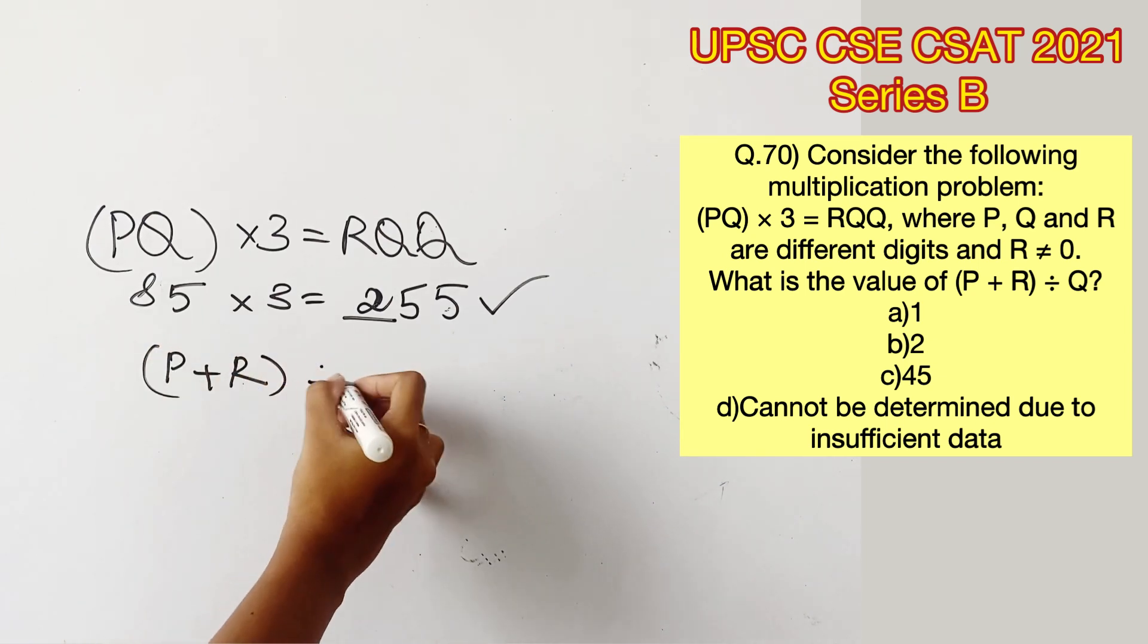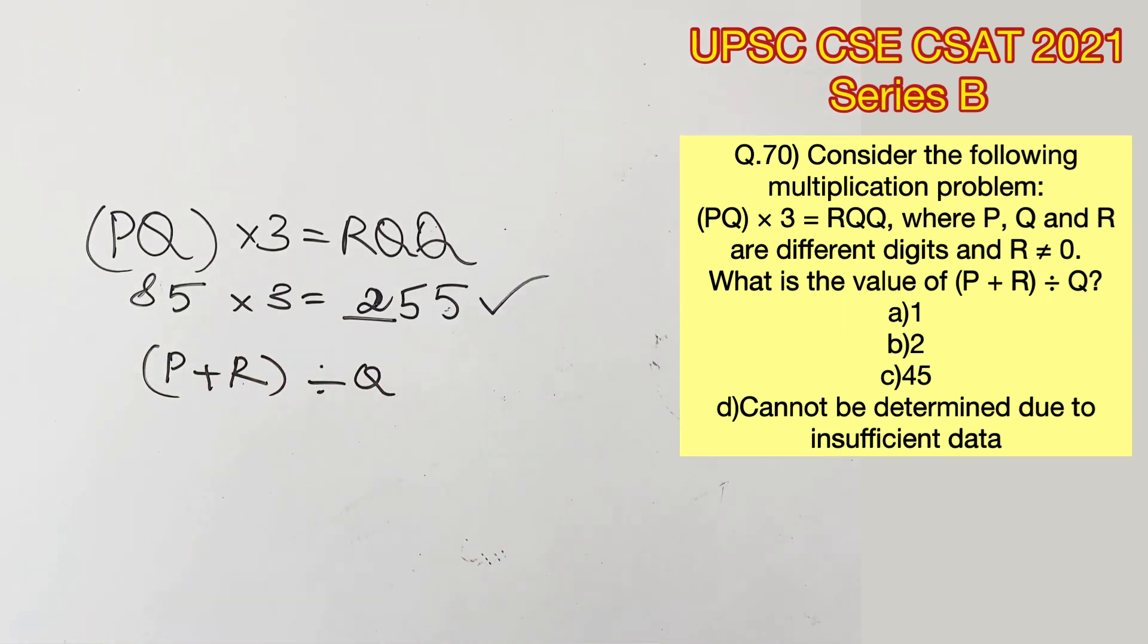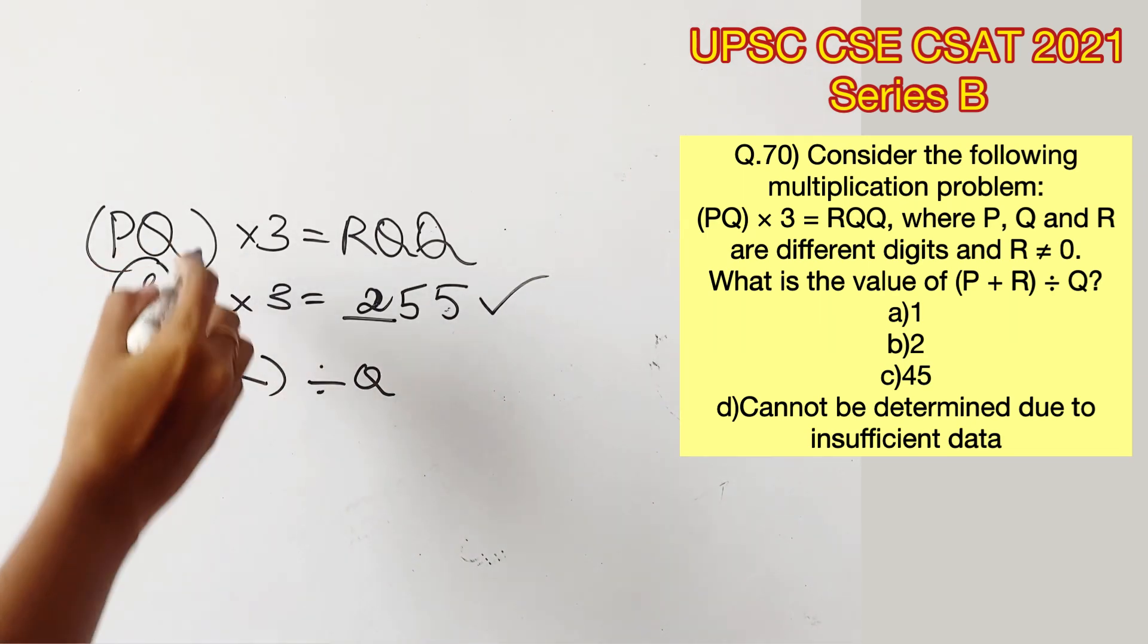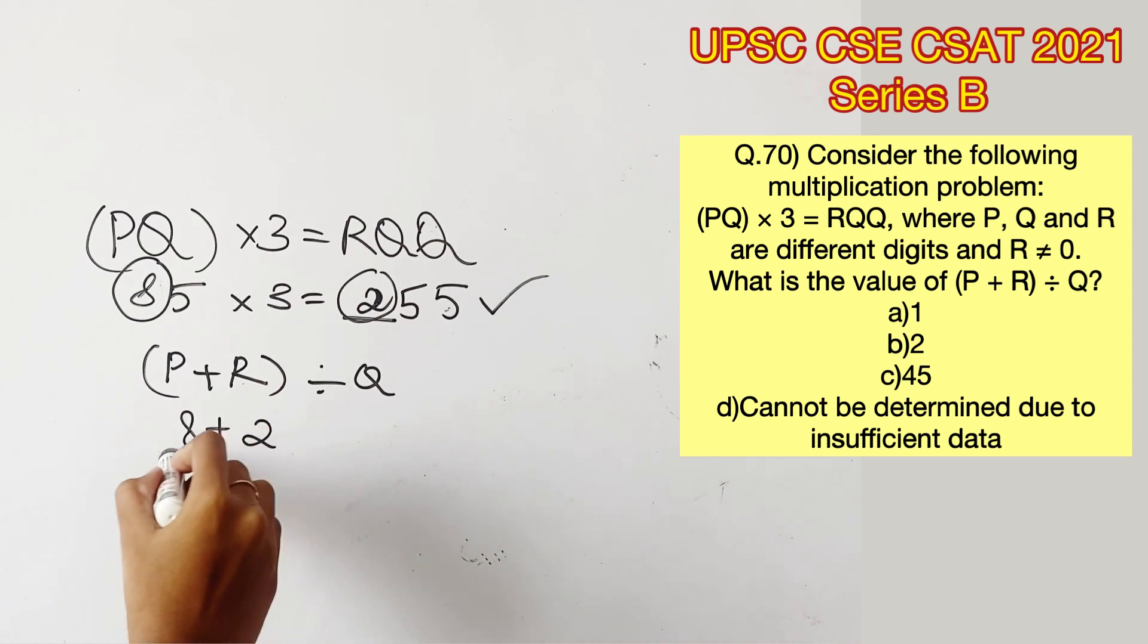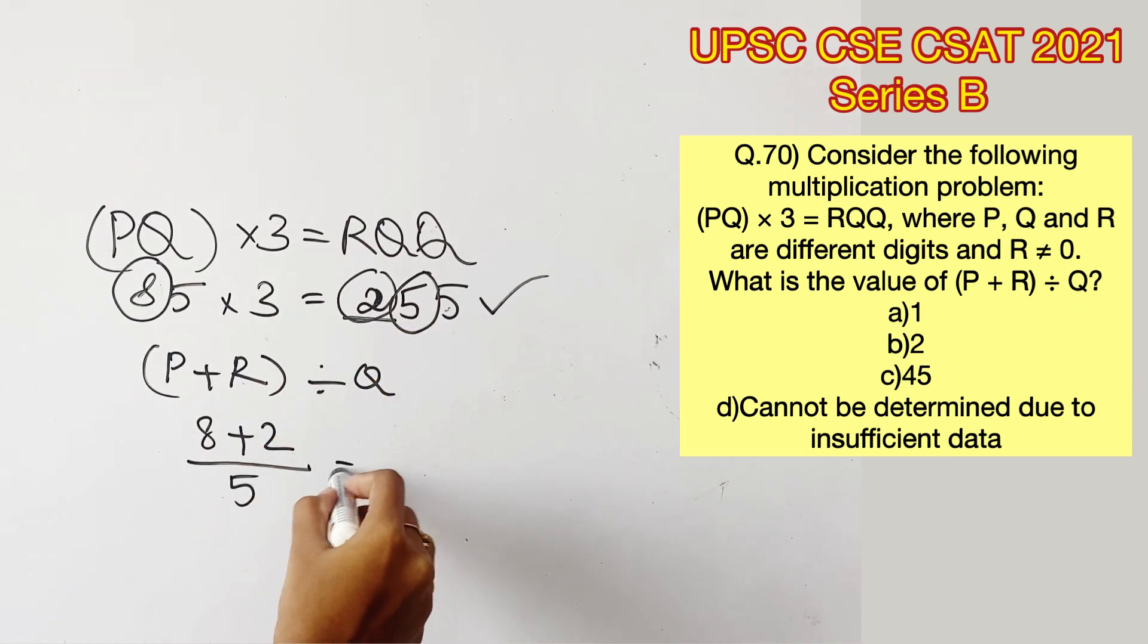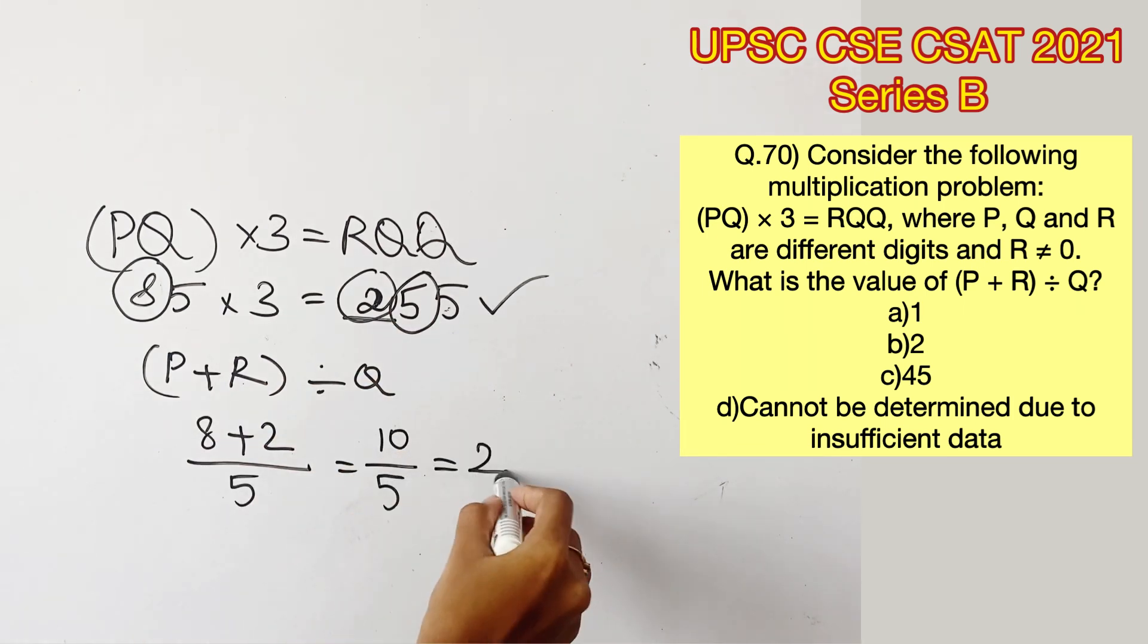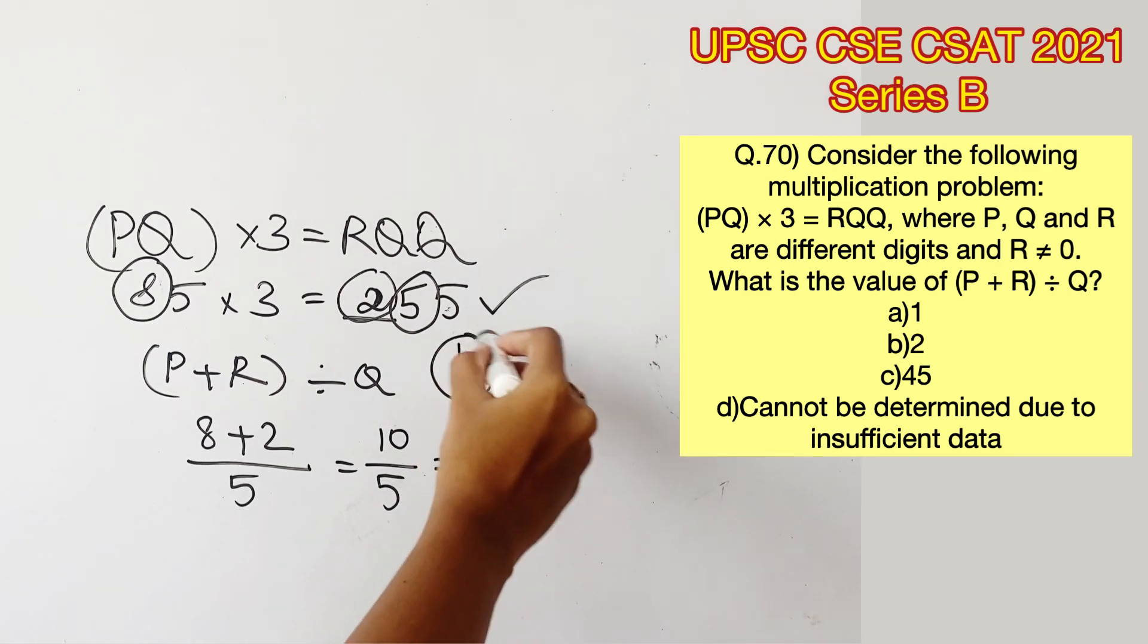Now we are supposed to find the value of P plus R divided by Q. We know that the value of P is 8, the value of R is 2, and the value of Q is 5. So dividing 10 by 5 we get the answer as 2. Therefore option B is the right answer.